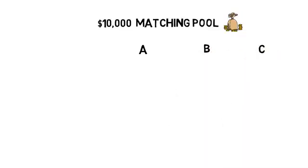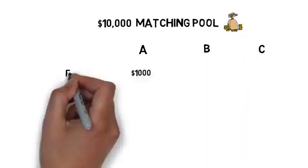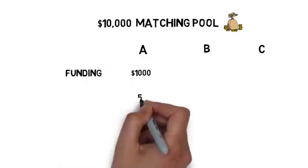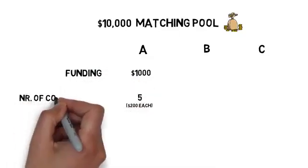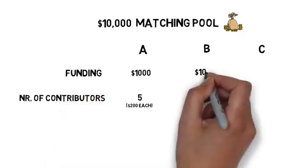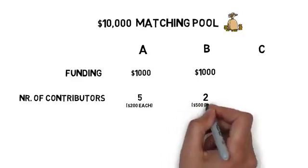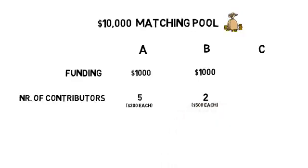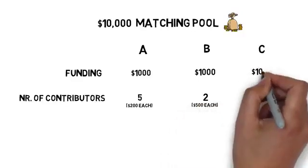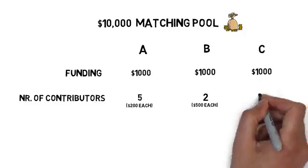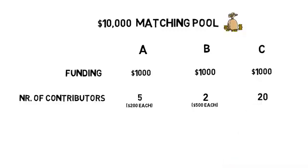Project A got $1,000 in funding from five contributors, $200 each. Project B also received $1,000 but from two contributors, $500 each. Project C received the same amount $1,000 from 20 contributors, $50 each.